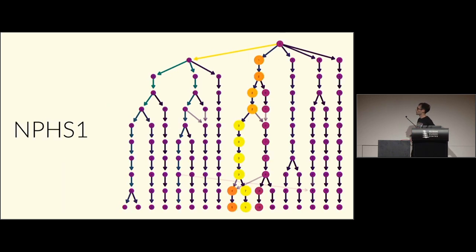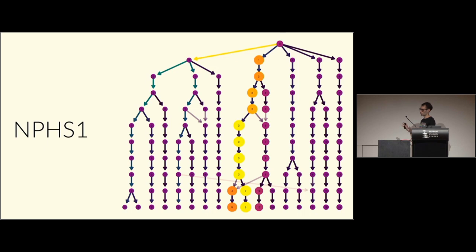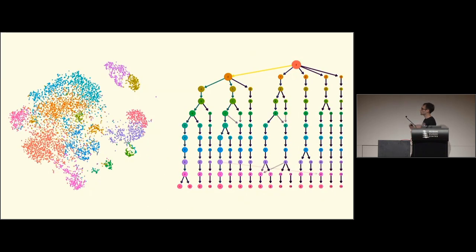Overlaying expression of a gene called nephrin — a marker of an important kidney cell type — it's expressed only in one part of the tree, with the signal getting stronger further down, until the crossing-edge region dilutes it with samples from another branch. Overlaying known information also serves as a validity check: if a gene known to mark one cell type were spread across many branches, that would indicate the clustering isn't working.